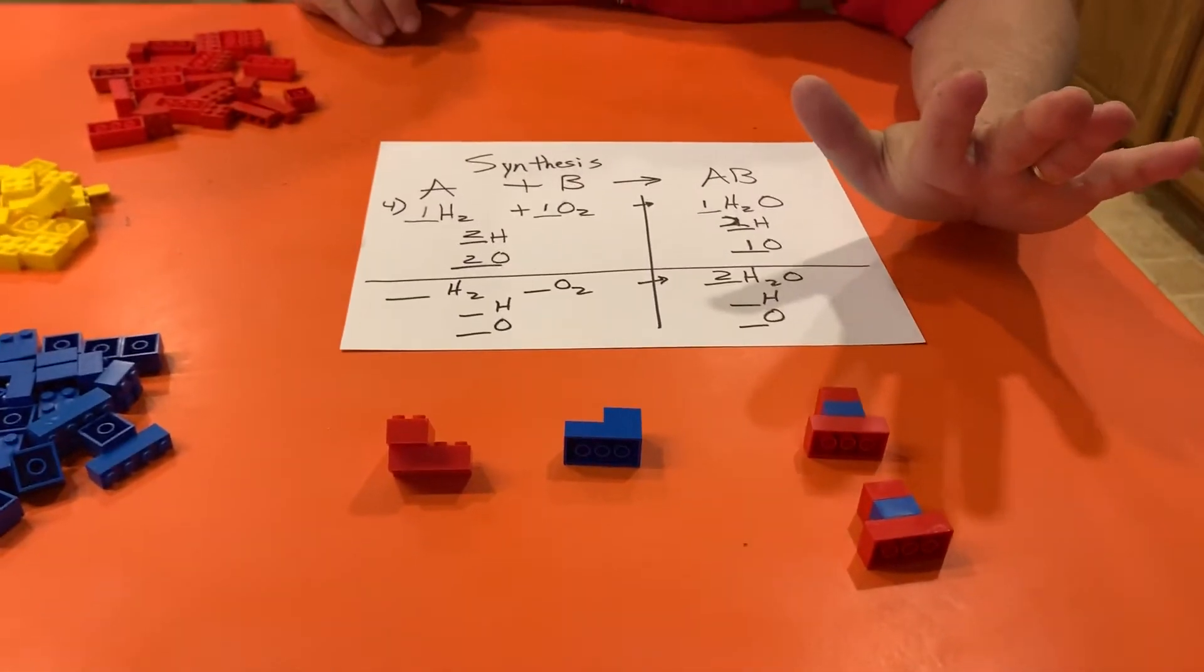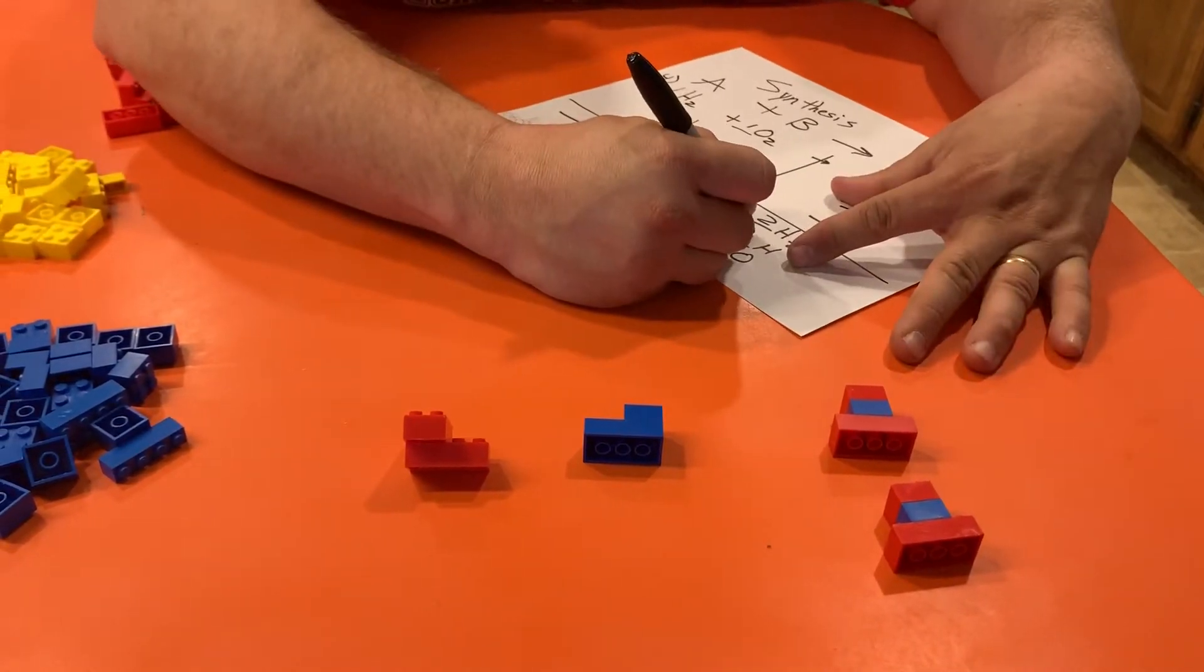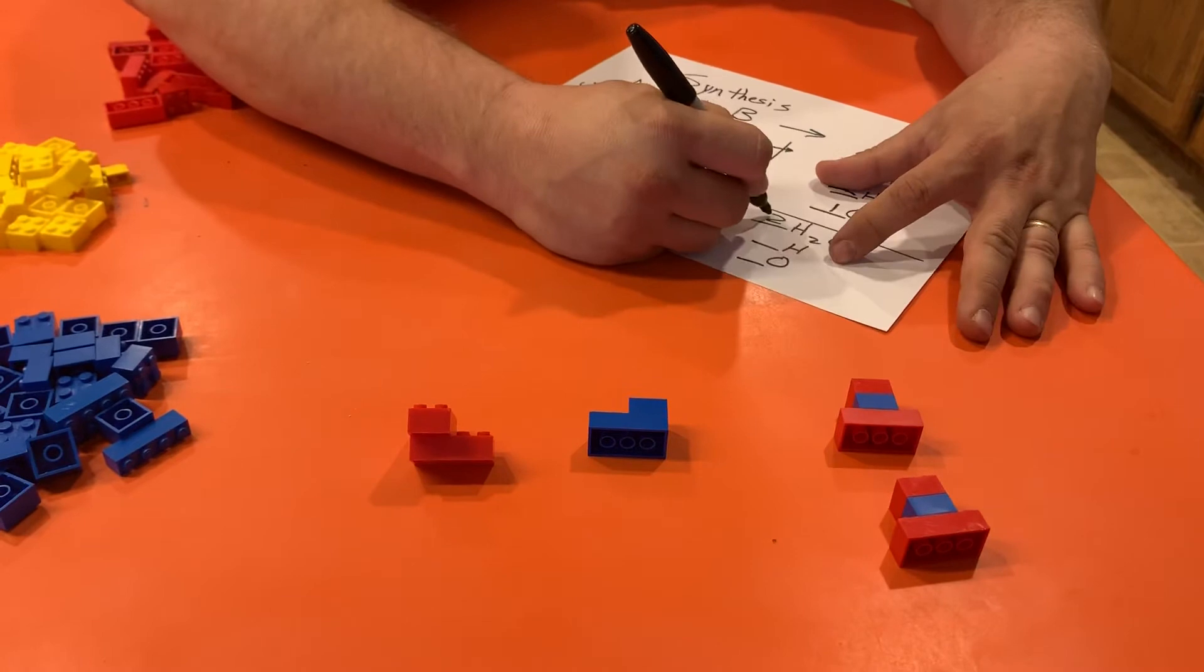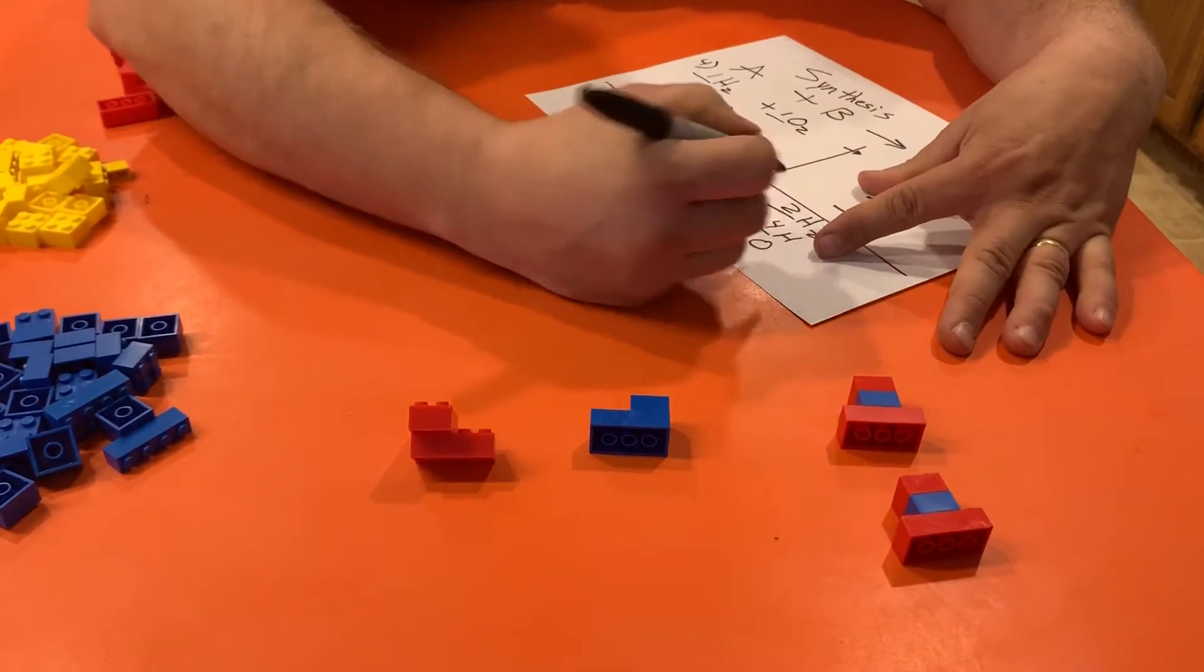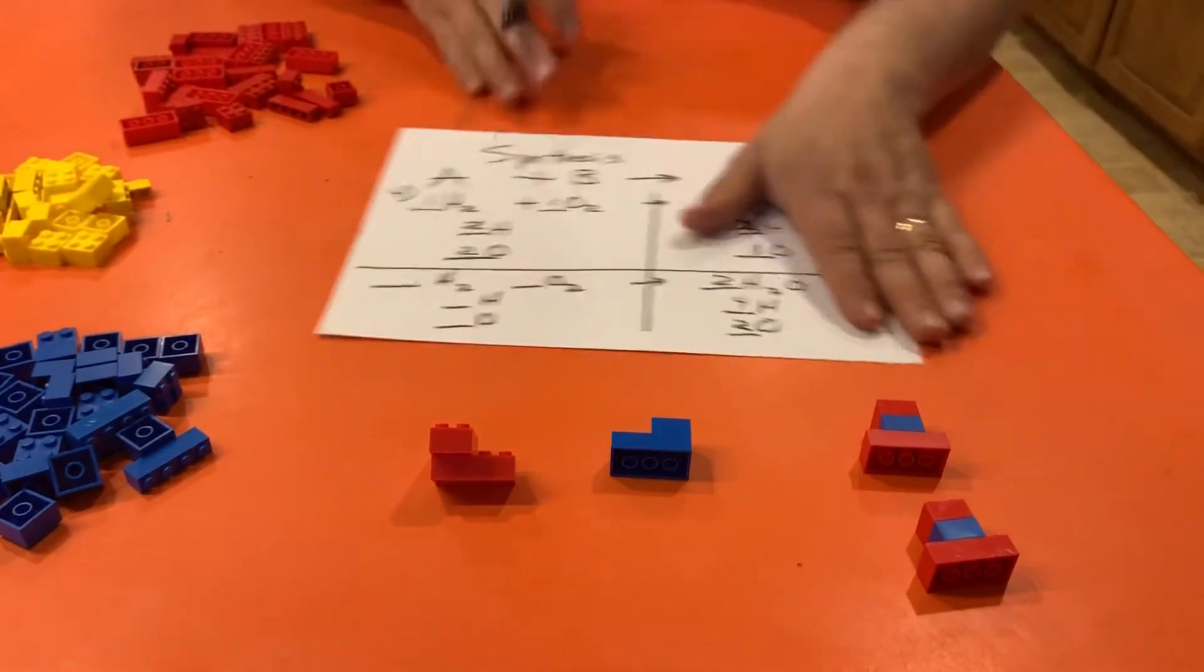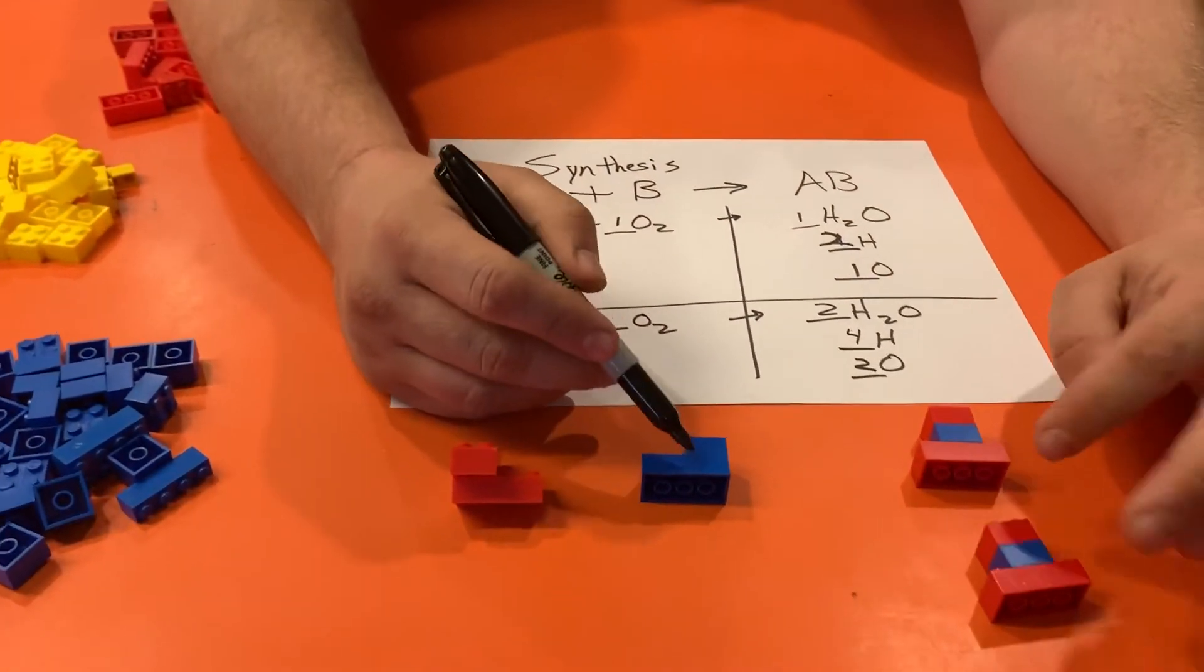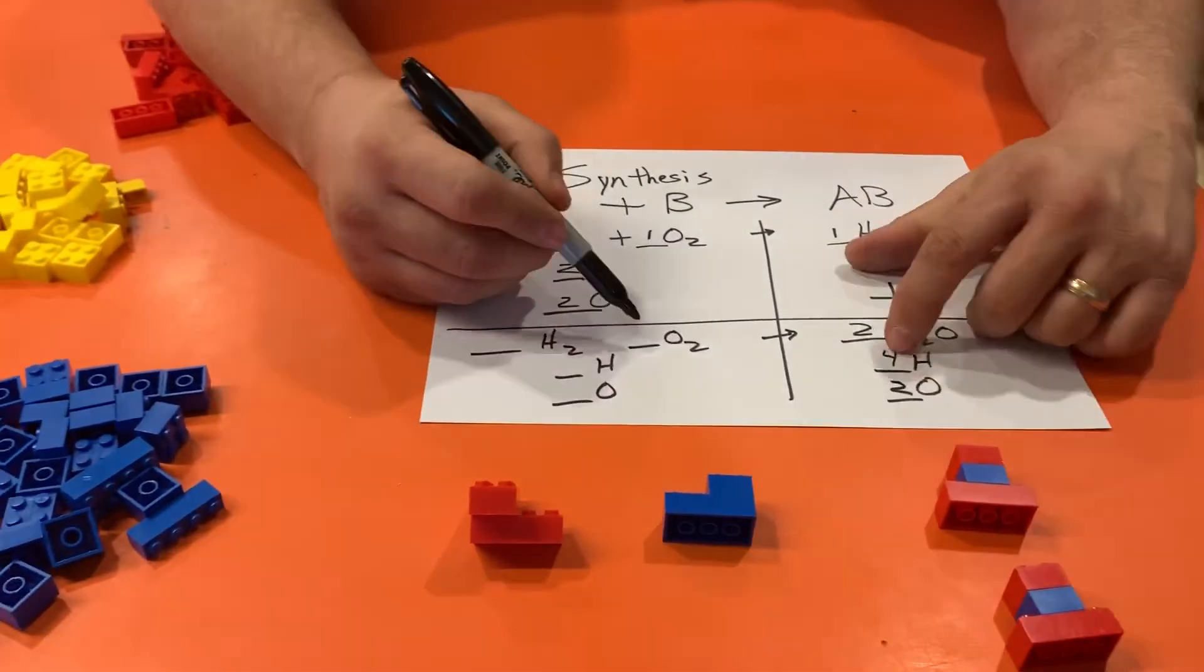Alright, so when I do that, I've got H2 with the two, so that's a total of four. And I've got two oxygens. Right now over here I've got my blue Legos match up—those are my oxygens. Fantastic.